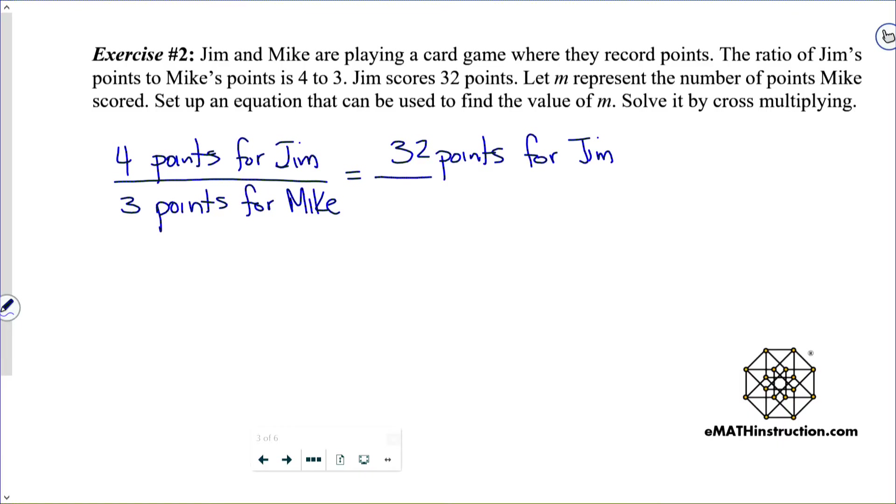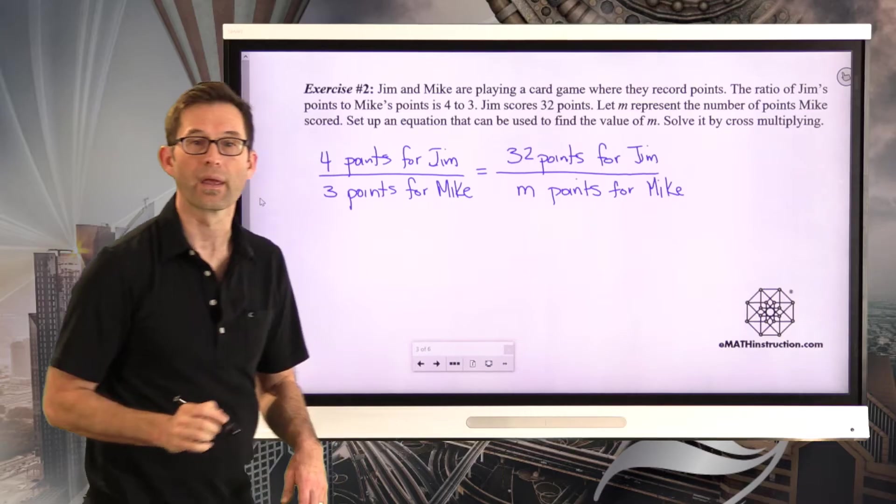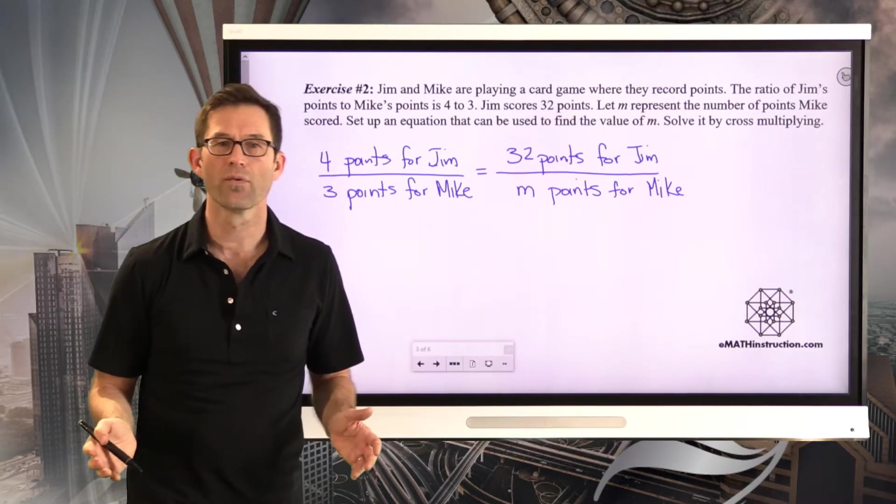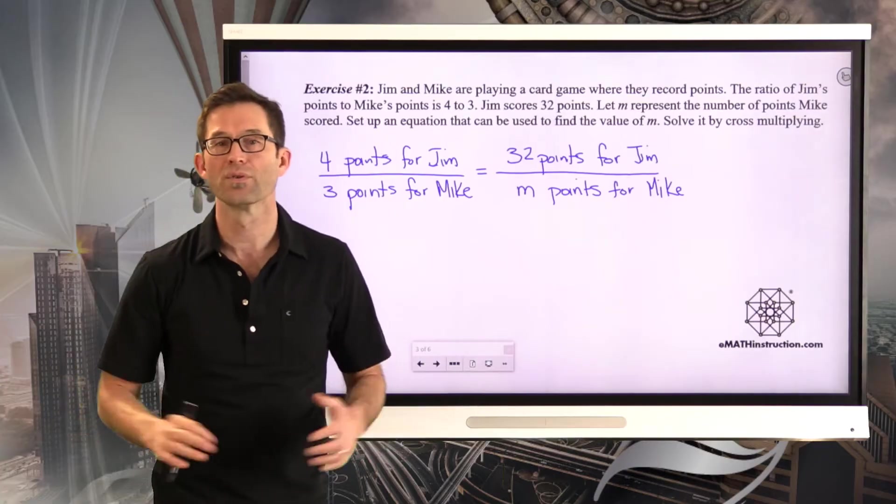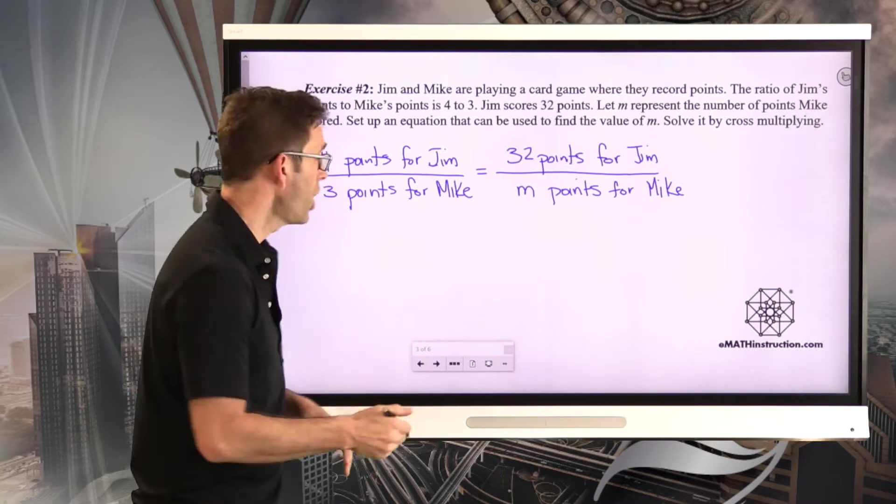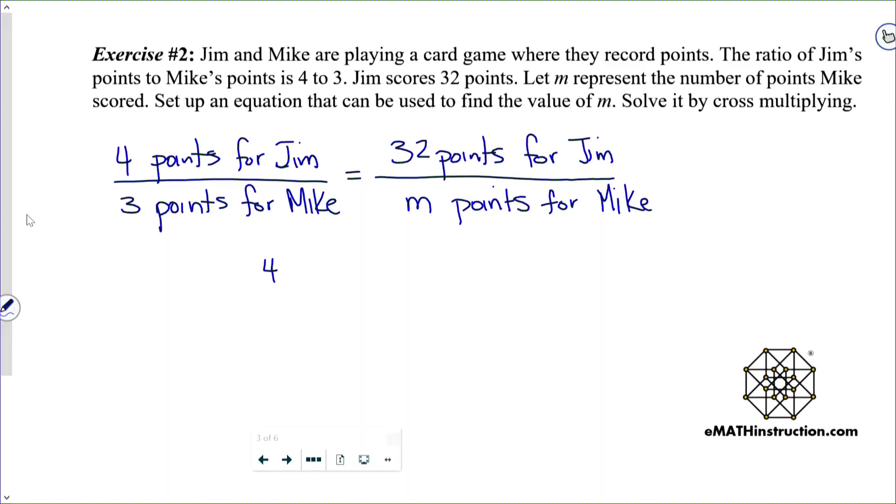We know Jim scores 32 points. And basically what we want to do is, if Jim's points are in the numerator on the left, we want Jim's points to be in the numerator on the right. So this is going to be equal to 32 points for Jim, and what we don't know is how many points for Mike. So we use a variable for it.